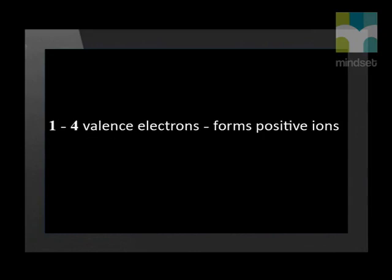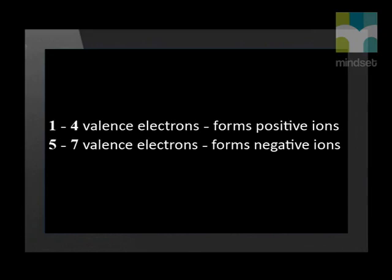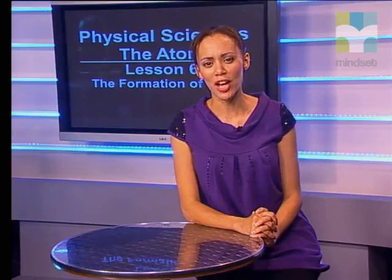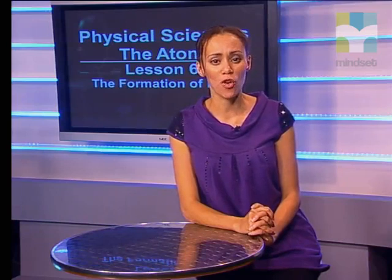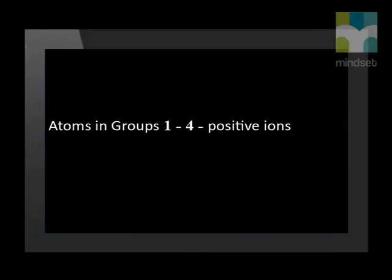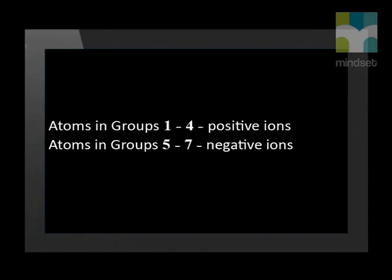If an atom has up to four valence electrons, it can lose these electrons to form a positive ion. If it has five to seven valence electrons, it can gain electrons to make a negative ion. Can you work out which groups in the periodic table are likely to form positive ions and which are likely to form negative ions? Atoms in groups one to four can form positive ions. Groups five, six, and seven can form negative ions.